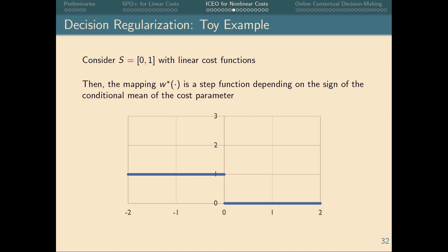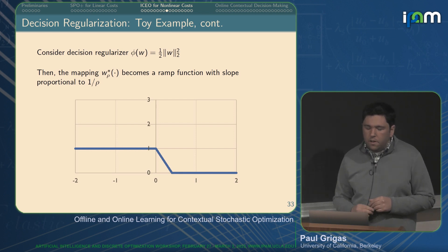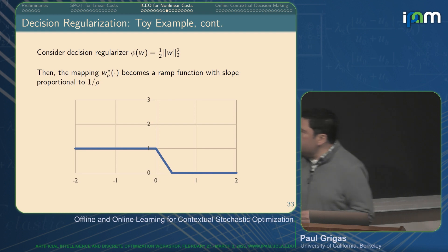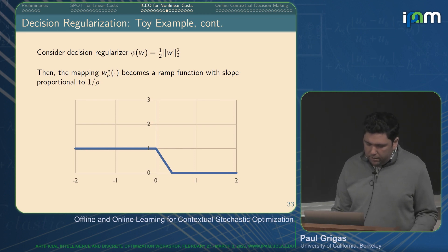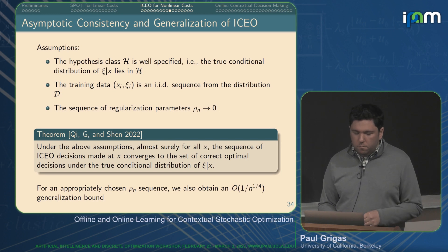Let me give intuition through a toy example. Suppose our feasible region is the interval [0,1] with a linear cost function. Then w* is just a step function — if the sign of the conditional mean of the cost vector is negative, the solution is 1; if positive, the solution is 0. Decision regularization turns this step function into a ramp function — a continuous interpolation between 0 and 1, with slope proportional to 1/ρ. This makes our function continuous and in fact Lipschitz, which enables us to prove statistical guarantees. We prove asymptotic consistency and generalization: under realizability and IID training data with a sequence of regularization parameters ρ going to zero, almost surely for all x we obtain the correct optimal decision under the true conditional distribution.